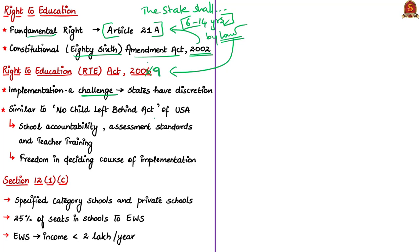State governments have discretion to decide on various matters regarding how the act is to be implemented in their jurisdiction under RTE rules and regulations. The author states that the Right to Education Act has many similarities to the education act of the United States of America called the No Child Left Behind Act. The similarities are in school accountability, assessment standards and teacher training. Even the United States has similar provisions with respect to discretion for federal units.